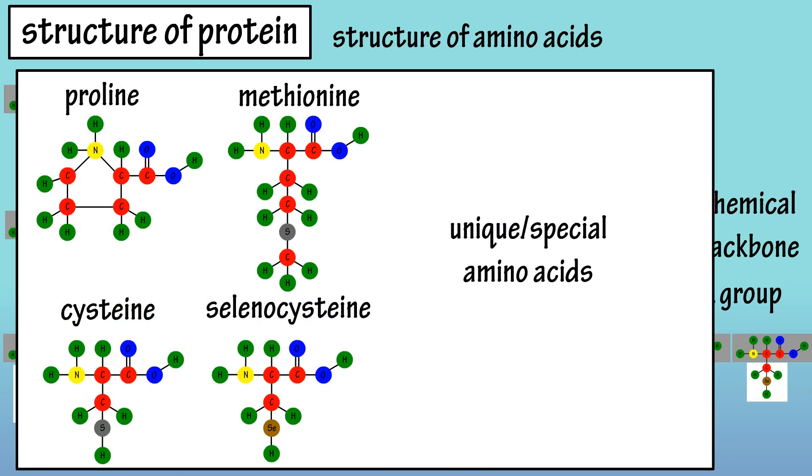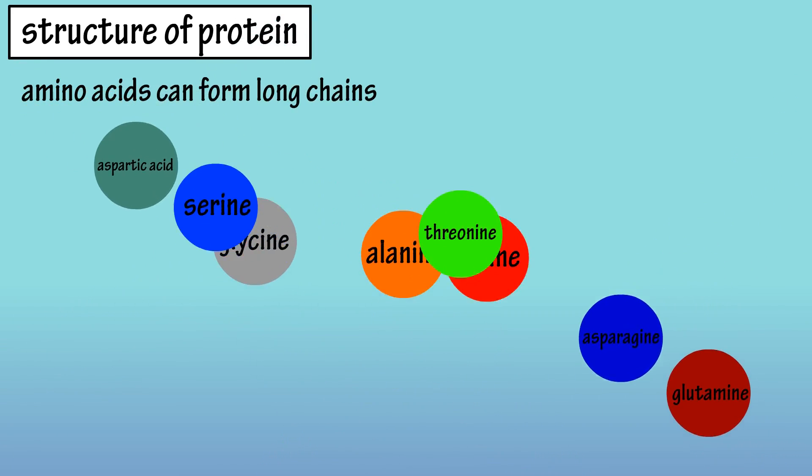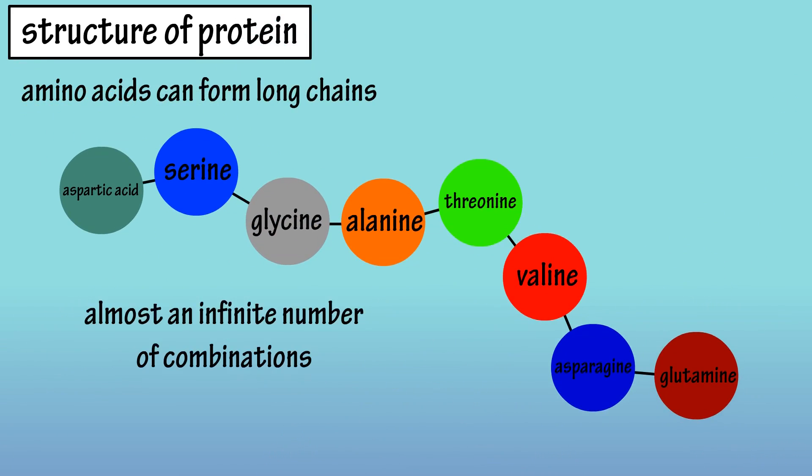And here are some amino acids that are considered to have unique structures. As was stated earlier, amino acids can link together to form long chains. There is an almost infinite number of different variations of chains that can be formed from amino acids. Each chain can have different characteristics with different chemical properties.